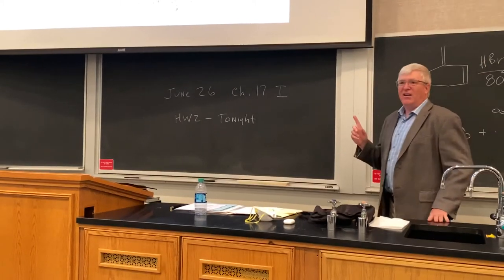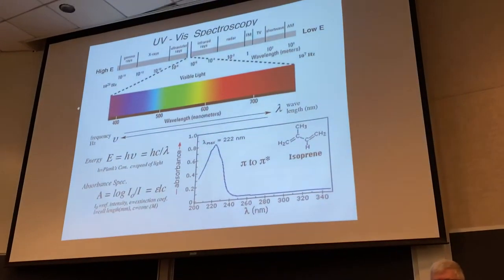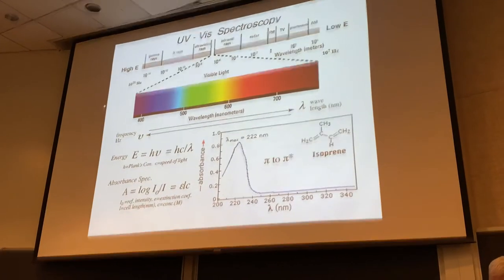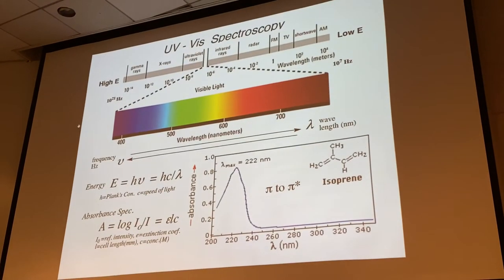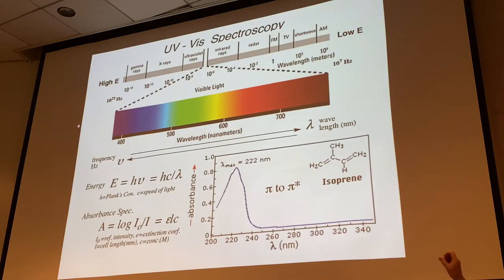Before we start chapter 17 on aromaticity, we have one topic that ties in to aromatic compounds: UV spectroscopy. You remember IR and NMR spectroscopy, where we shine electromagnetic radiation on a molecule and see what specific frequencies it absorbs. Ultraviolet is just a little bit beyond the visible range, although some polyenes absorb at low enough energy to absorb in the visible range and have a color.